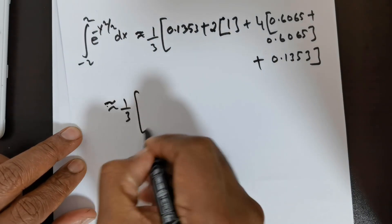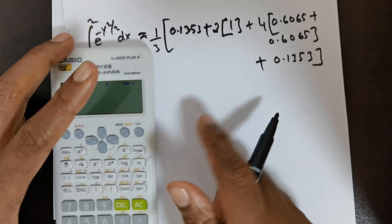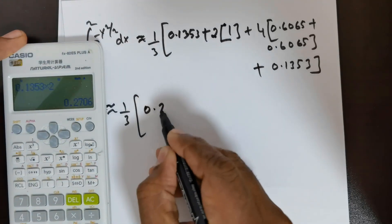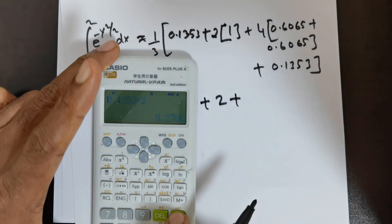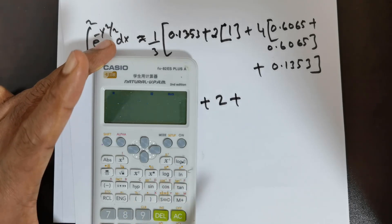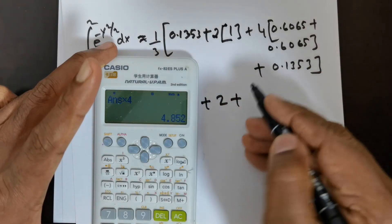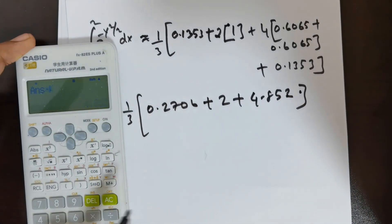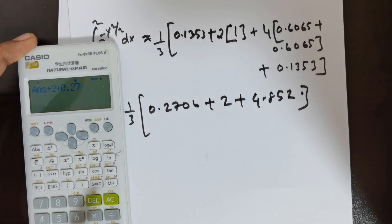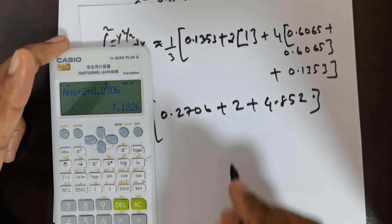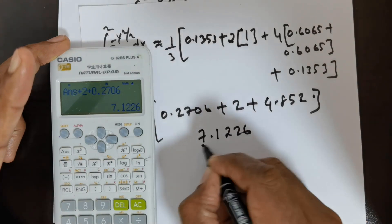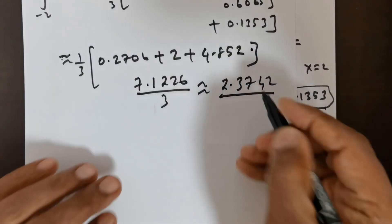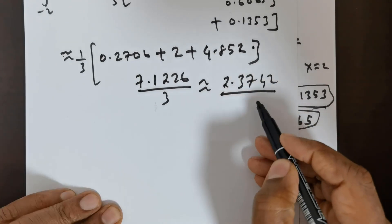So this is approximately 1 over 3 times the total. Adding the entries: 0.1353 plus 0.1353 gives 0.2706. The 4 times (0.6065 plus 0.6065) gives 4.852. Plus 2 times 1 = 2. Adding 2 plus 0.2706 plus 4.852 gives 7.1226, divided by 3, giving approximately 2.3742. This is a very close value to the absolute solution.